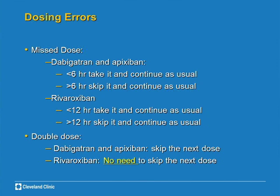Regarding dosing errors: if patients missed a dose and it's within 6 hours, tell them to go ahead and take that dose. If it is more than 6 hours, skip it and take the next dose. For rivaroxaban, because it's once daily, apply the 12-hour rule: less than 12 hours, go ahead and take it; more than 12 hours, skip it and go for the next dose. If they accidentally took a double dose, tell them to skip the next dose — except for rivaroxaban, where there is no need to skip, and you continue with the same regimen.